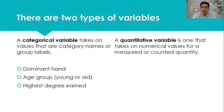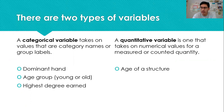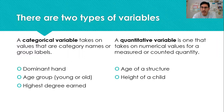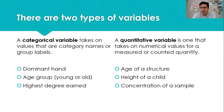Quantitative variables are things that we record with numbers because numbers come from measuring or counting things. For example, the age of a structure — five years, ten years, a hundred years old — the height of a child — three feet, four feet, four and a half feet tall — or the concentration of a sample — two parts per million, seven parts per million.